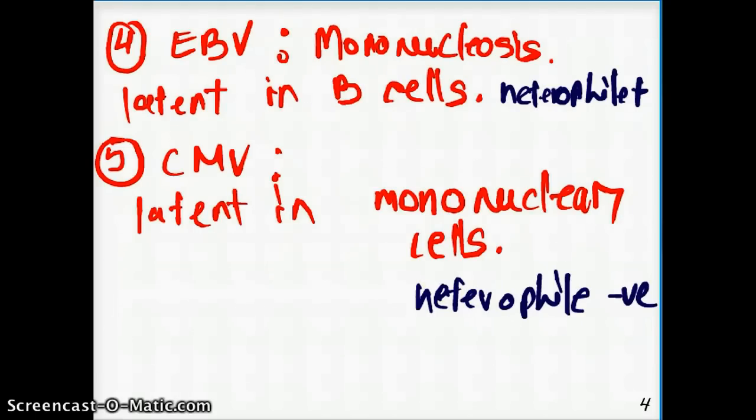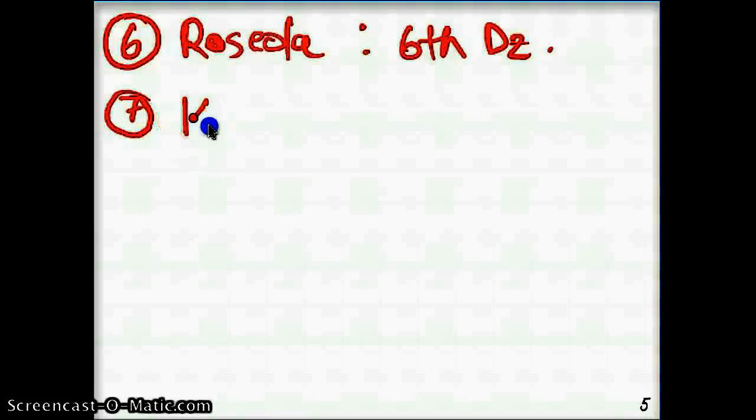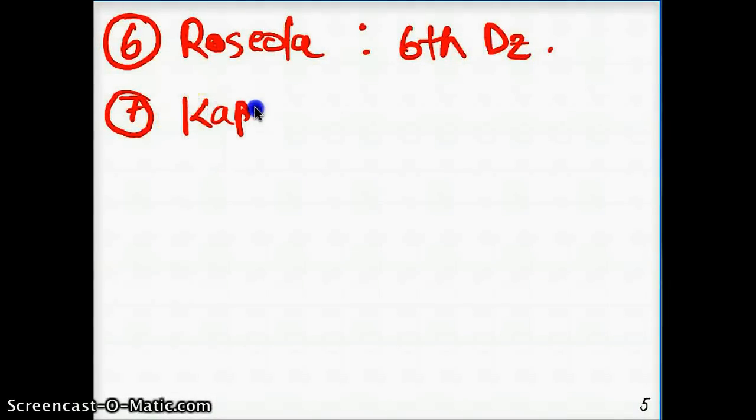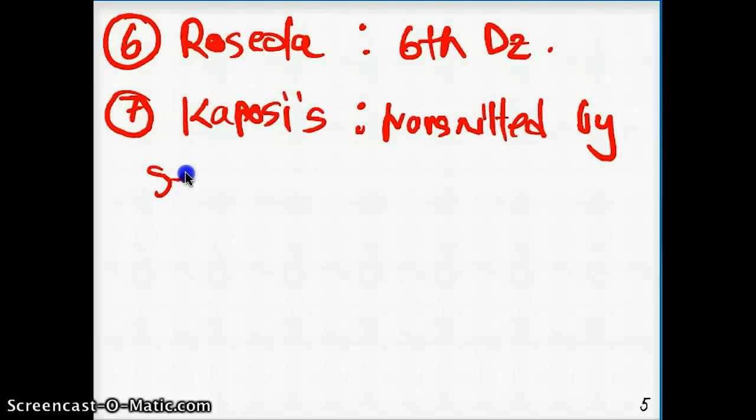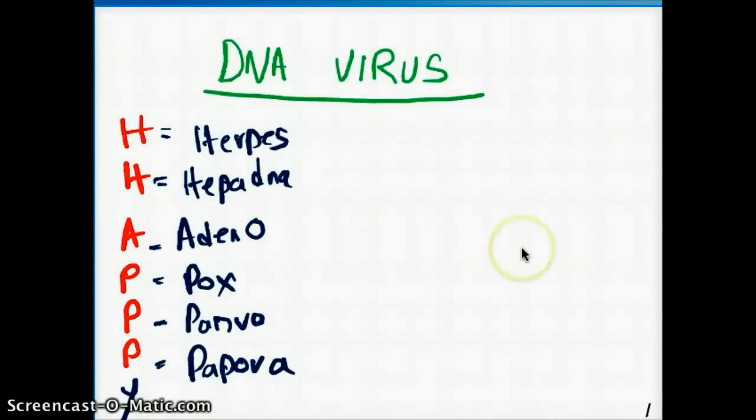Moving on to the next one. Number six of the herpes virus is going to be Roseola. This is the one that causes sixth disease. This is the one that causes heart disease, followed by Kaposi's sarcoma. This is transmitted by sexual contact. Now, those are all the herpes viruses.